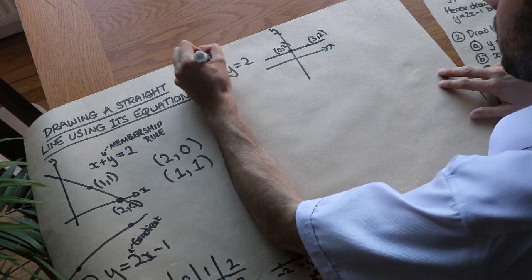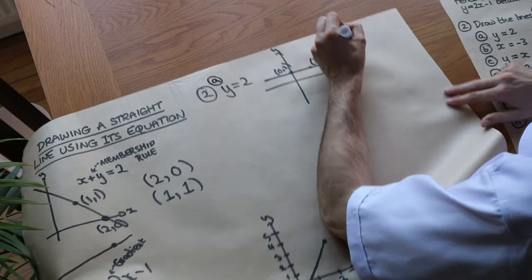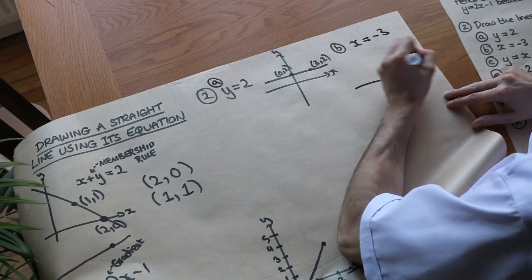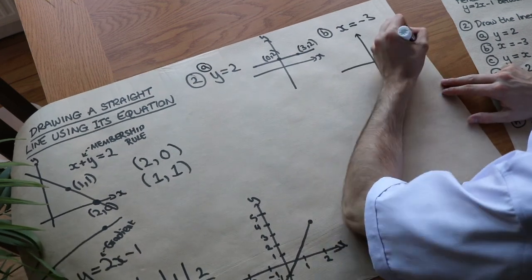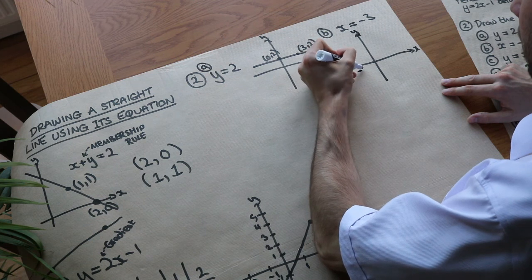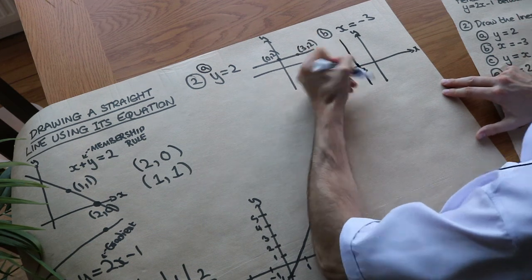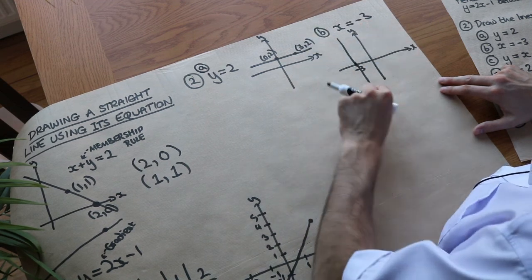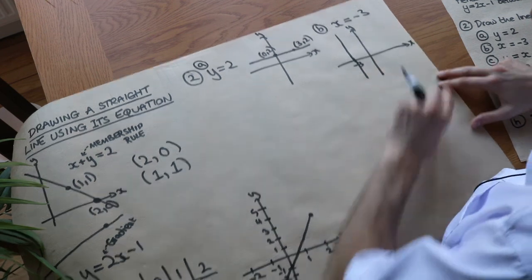Next, x is equal to minus 3. That's going to be very similar, but it's going to cut the x-axis at minus 3. So at minus 3 on the x-axis, it's going to be a vertical line. Any point we pick on this line has x value equal to minus 3, so it obeys this membership rule.